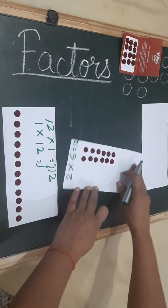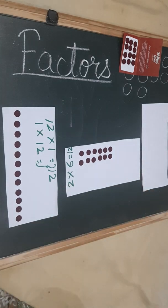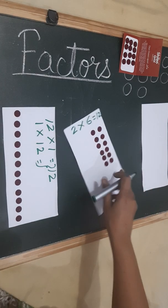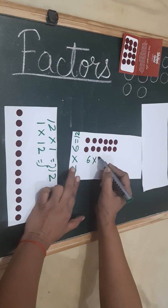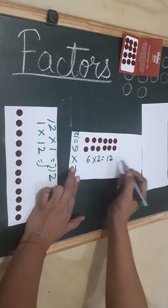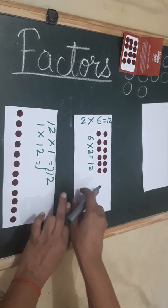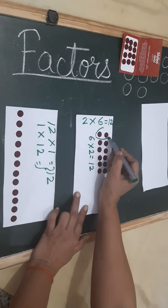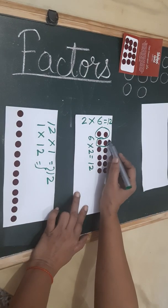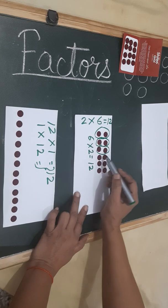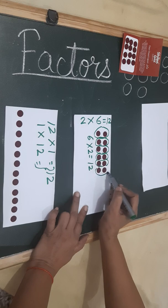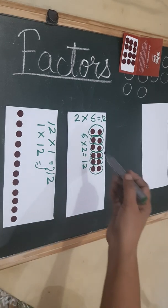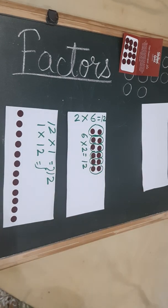Now I will arrange it 6 times 2, and that is also 12. It is 1 time, 2 times, 3 times, 4 times, 5 times, and 6 times. So this is 6 times 2, and that is also 12.